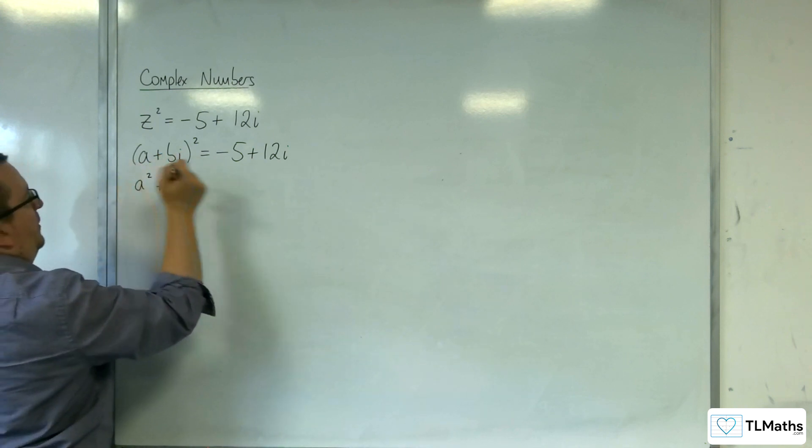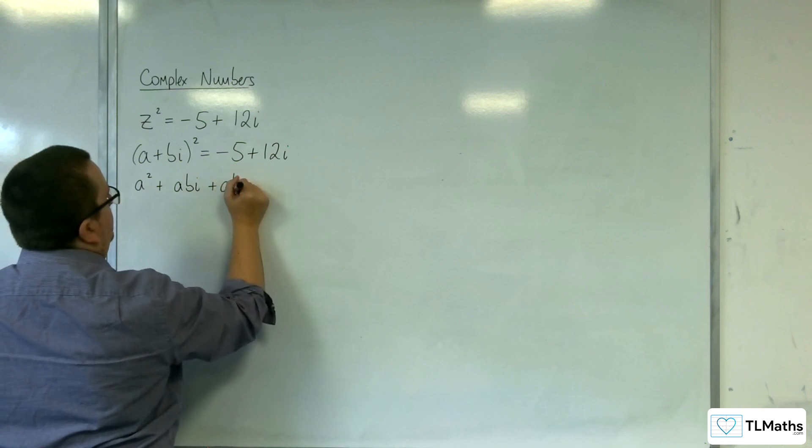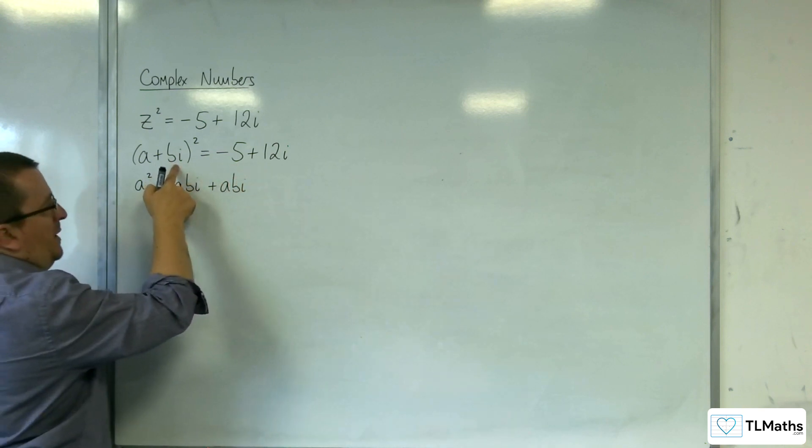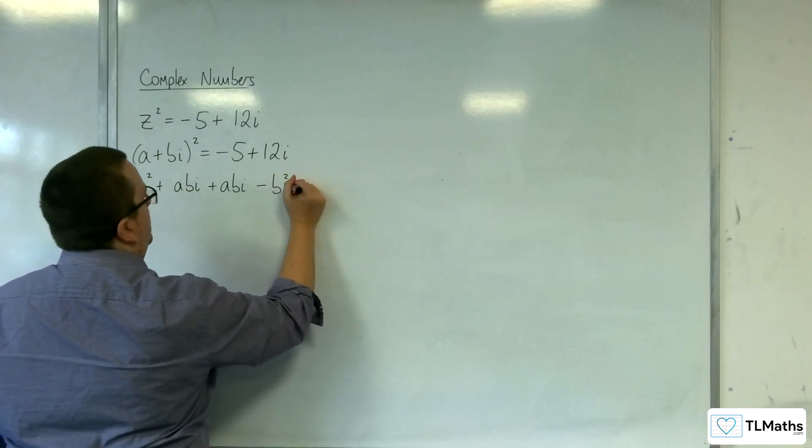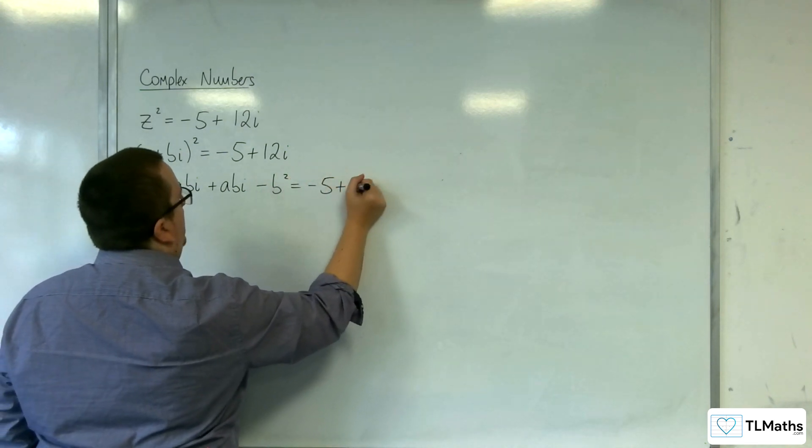Then we're going to get bi times a, so another abi. And then you've got bi times bi, which is b² times -1, so -b². That's equal to the -5+12i.